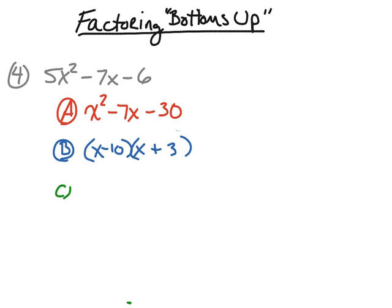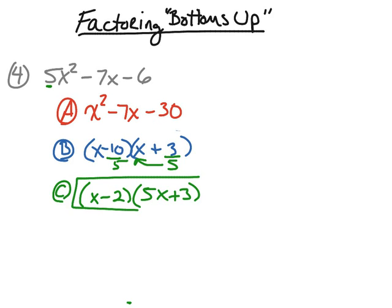The last step is to divide negative 10 and 3 by 5 — that's the leading coefficient. Negative 10 divided by 5 is negative 2. If I try to divide 3 by 5, that results in a decimal, so we bring that number up in front of the variable, making it 5x + 3. Therefore, the factors of 5x² − 7x − 6 are (x − 2) and (5x + 3).